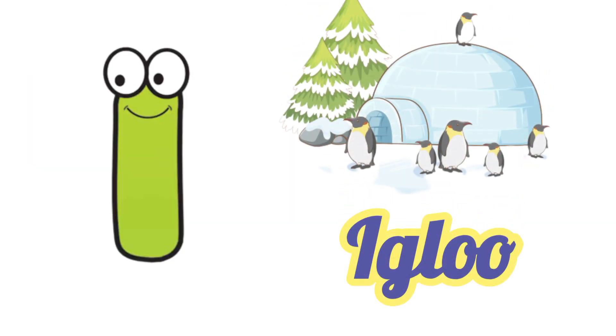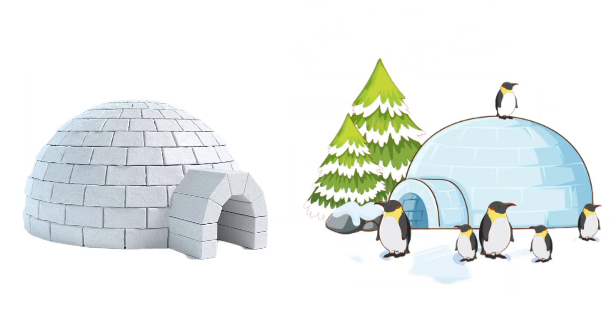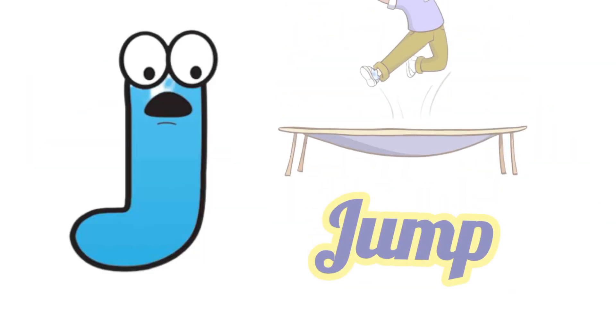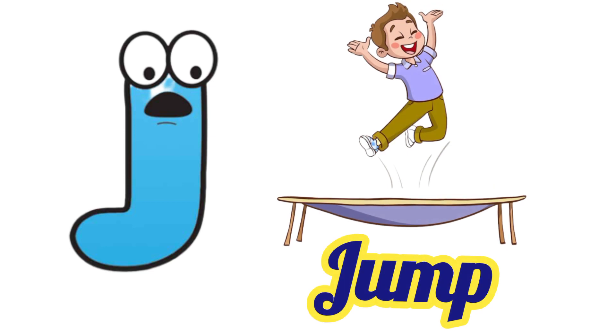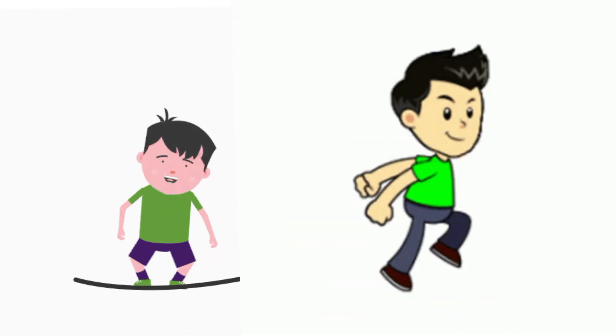I is for igloo, i-i-igloo. J is for jump, j-j-jump.